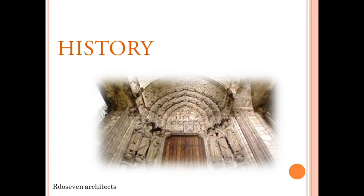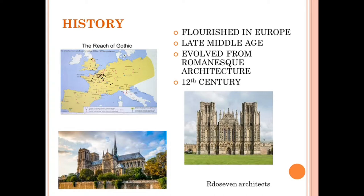Gothic architecture is an architectural style that flourished in Europe during the high and late Middle Ages. It evolved from Romanesque architecture and was succeeded by Renaissance architecture. It originated in 12th century northern France and England, as a development of the Norman architecture.